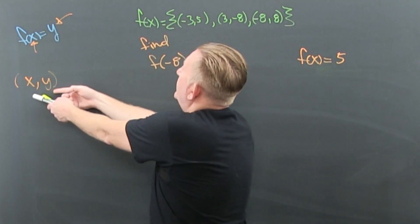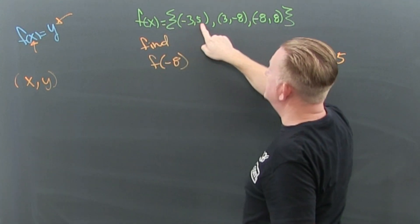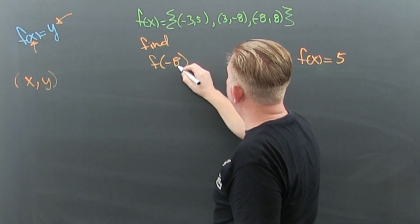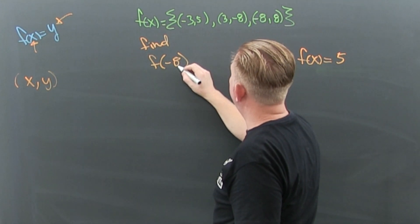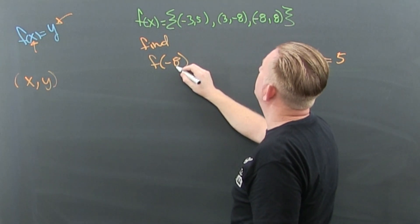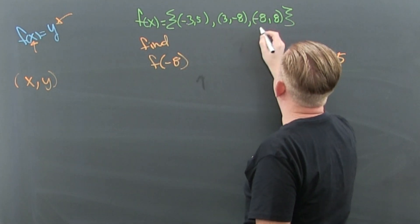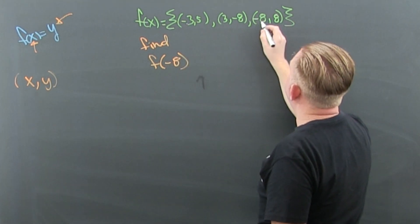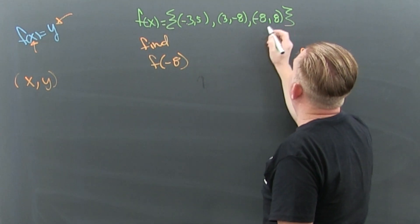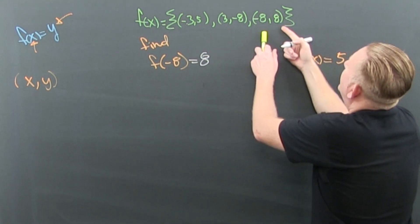We have these points. That's my x, and this is my y. So here I'm going to find my x. Where is my x minus 8? When my x is minus 8, what's my y? Looks like it's going to be 8.